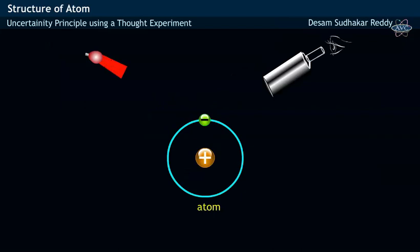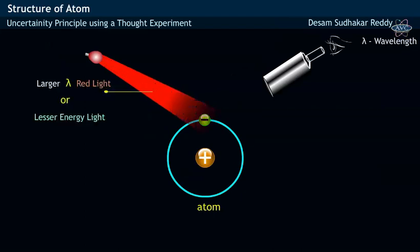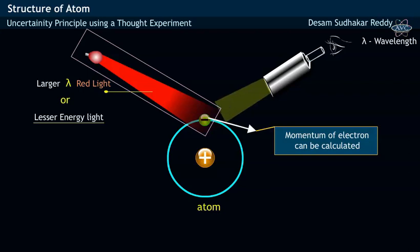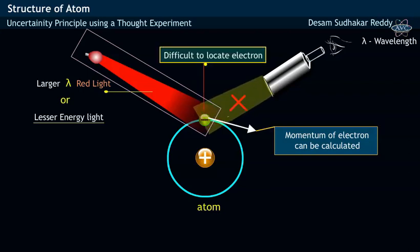In a similar fashion, larger wavelength light having lesser energy would allow us to measure the momentum of an electron. But, using this larger wavelength light having low energy, we may not be able to locate the position of an electron.